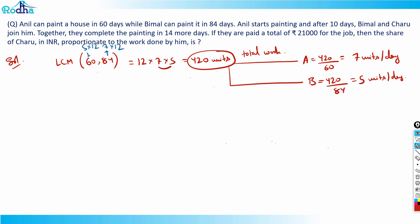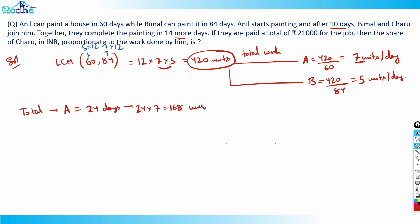Now, A and B work like this: A initially worked for 10 days, and after Bimal and Charu joined, he worked 14 more days — so A has worked a total of 24 days. In 24 days, A works 24 × 7 = 168 units out of 420. B has worked for just 14 days, and B's efficiency is 5 units per day, so B worked 14 × 5 = 70 units.